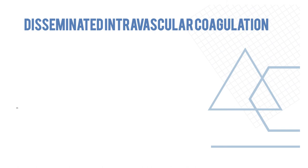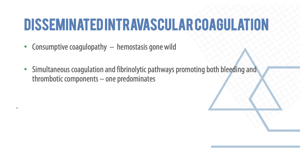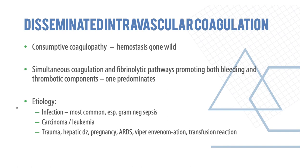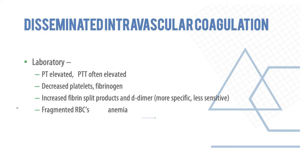Disseminated intravascular coagulation (DIC) is a consumptive coagulopathy — hemostasis gone wild. There is simultaneous activation of both coagulation and fibrinolytic pathways, promoting both bleeding and thrombotic components. Most common causes include infection especially gram-negative sepsis, cancers and leukemias, trauma, hepatic diseases, pregnancy, acute respiratory distress syndrome, viper venom, and transfusion reactions. PT and aPTT are both elevated in these patients.